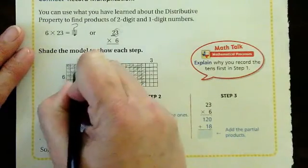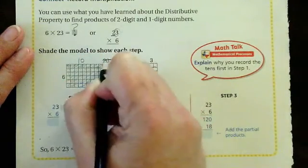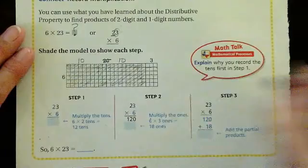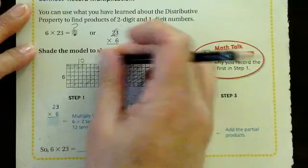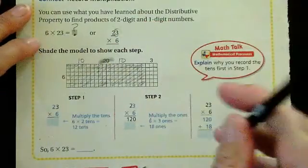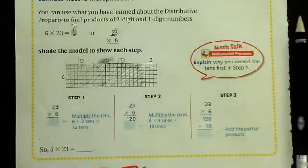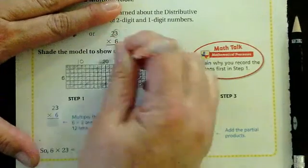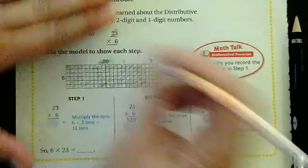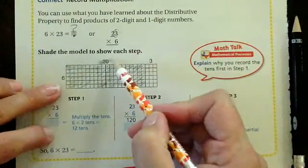Another way I could do it is six rows of ten and six rows of ten and six rows of three, if you're more comfortable with the distributive property. If you understand what's happening right now and you can do the six times twenty, which we all should. We learned that in the last chapter, how to multiply by multiples of ten.